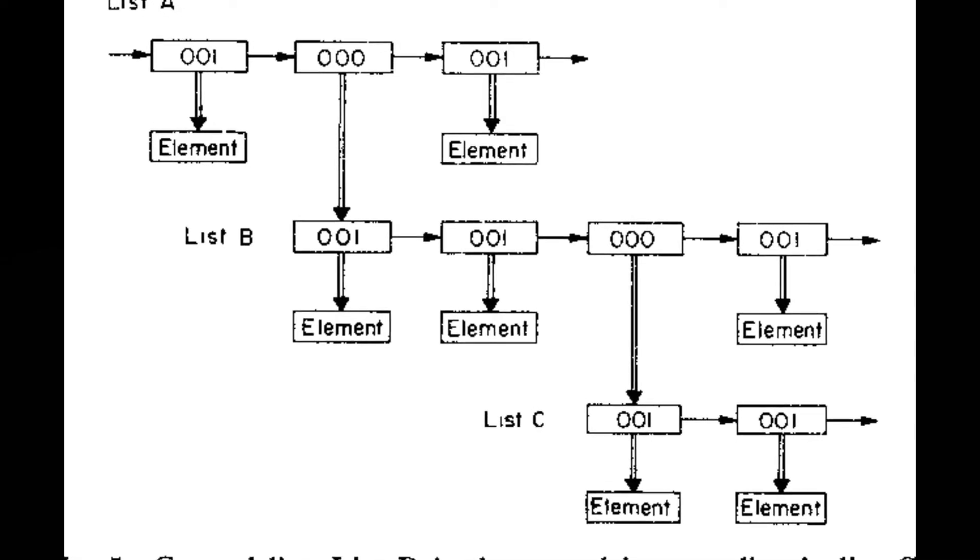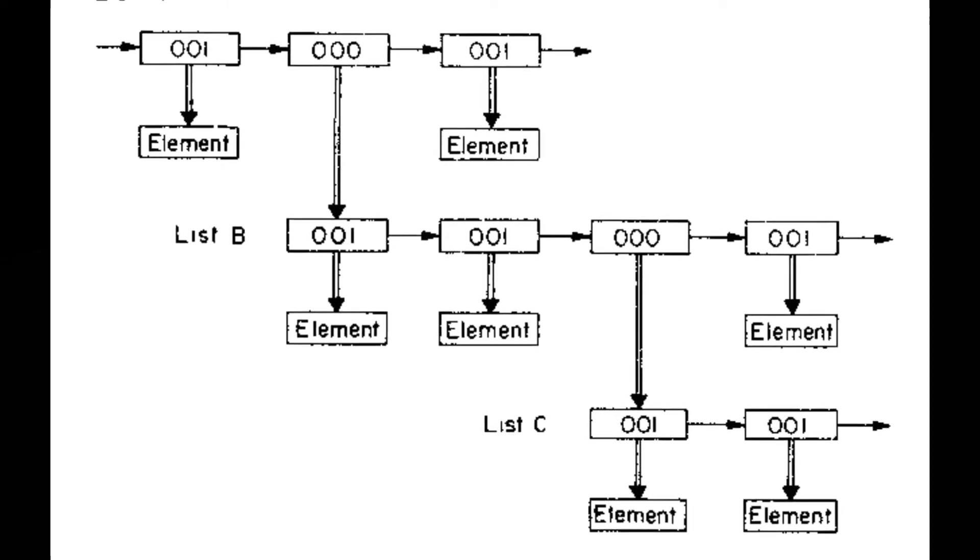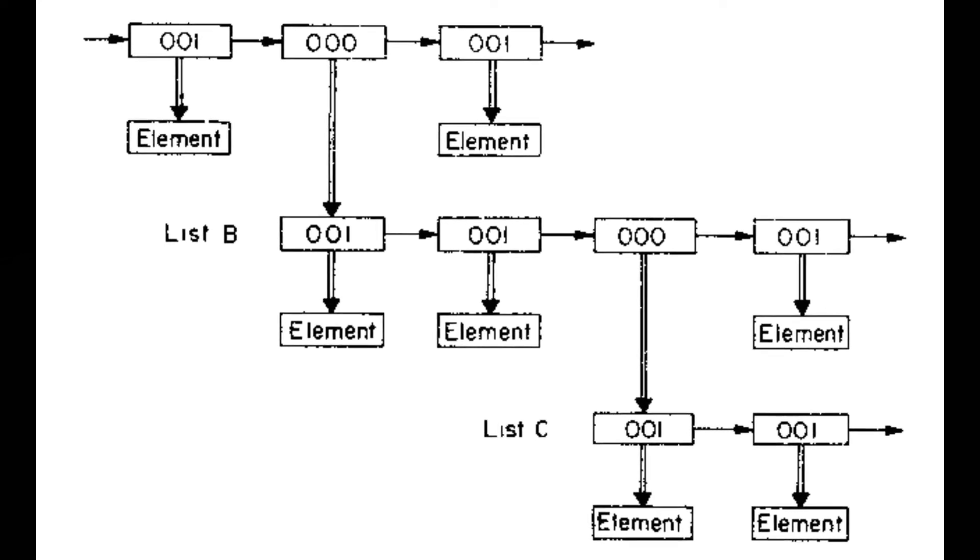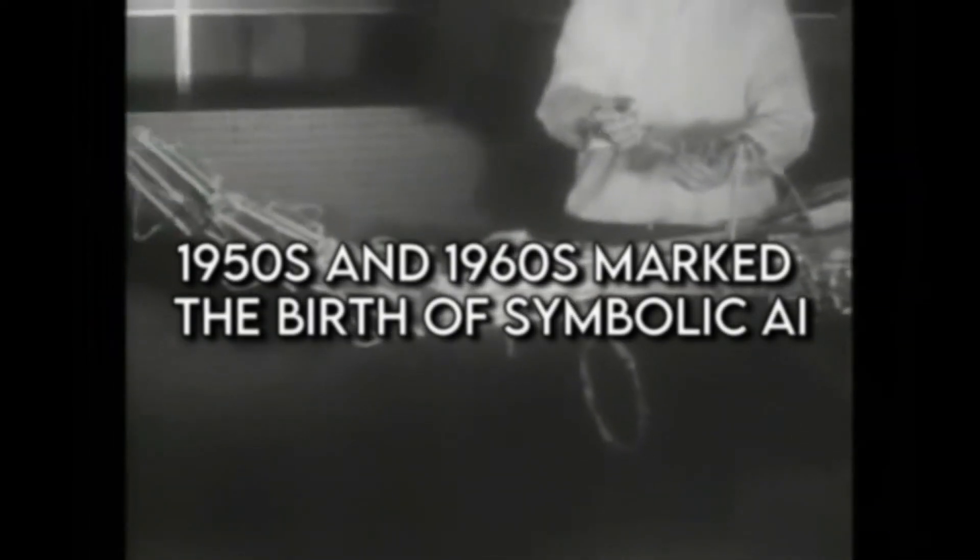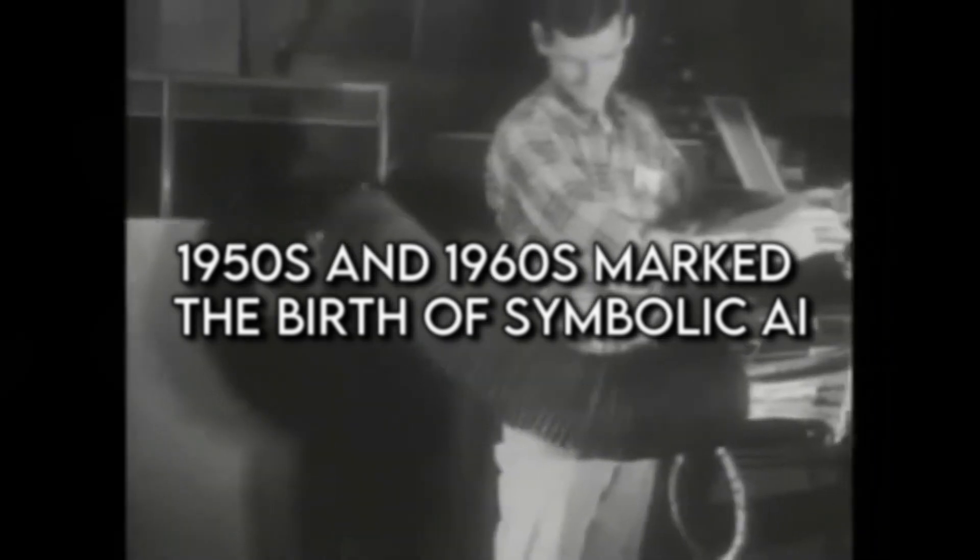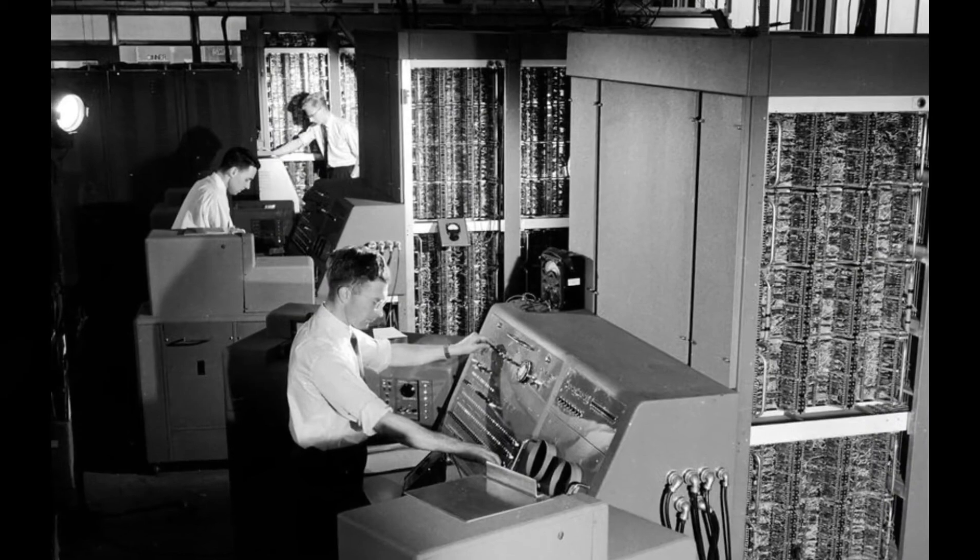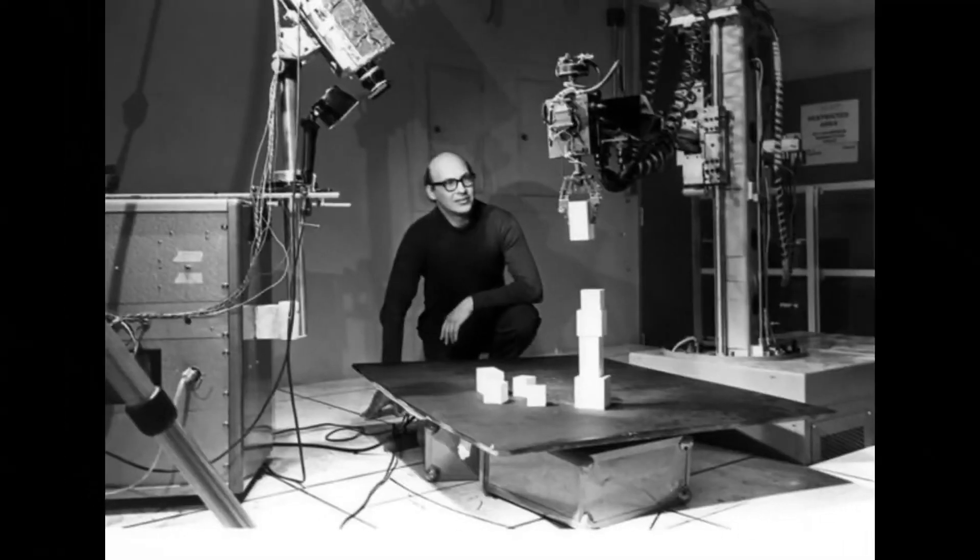They laid the groundwork for AI with their pioneering work on algorithms and computational theory. In the years that followed, AI saw several breakthroughs and revolutions. The 1950s and 1960s marked the birth of symbolic AI, where computers were programmed with rules and logic to mimic human problem-solving.